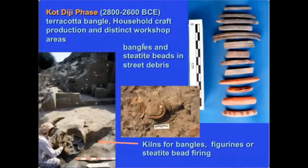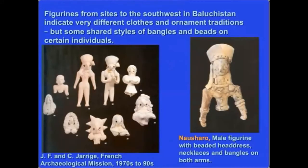Moving back to Harappa, we have evidence for more elaborate styles of bangles — gray bangles, design bangles, painted bangles — indicating hierarchy within bangle use. Comparing Harappa with other sites, figurines from Nausharo in Baluchistan look different; the ways ornaments are worn and the style of headdresses are different. This shows regional styles of ornamentation were developing across the Indus, with communities using bangles, beads, and textiles in slightly different ways.